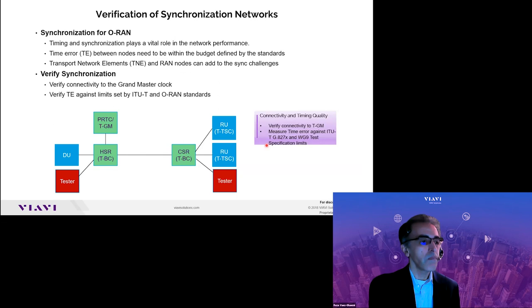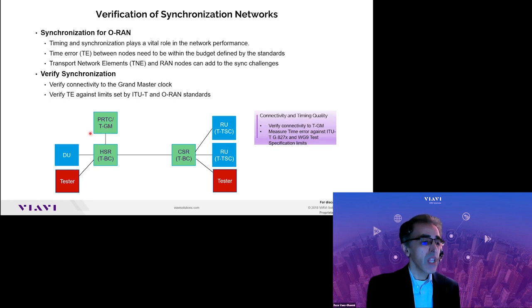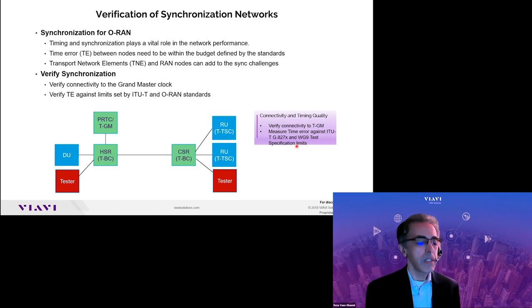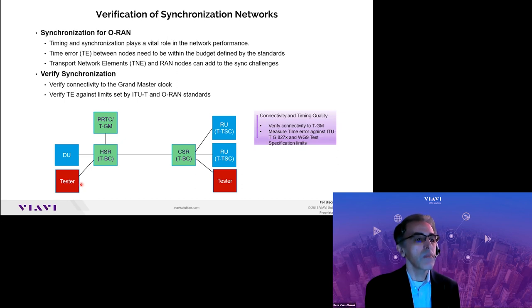We characterize synchronization by either using a T-GM Grandmaster as a source, or using a tester as a Grandmaster if one is not available in that particular setup, and then use a tester as a slave or subordinate to verify that we have a valid PTP session, SYNC-E is valid, and to test to the limits defined in ITU-T or Workgroup 9 test specification. Time error is very critical, and there are many different parameters to test. Without synchronization, the RUs won't be able to lock, and if they don't lock, they don't transmit.